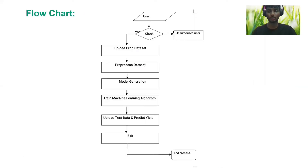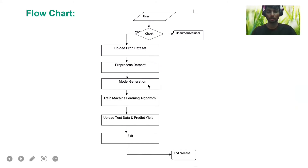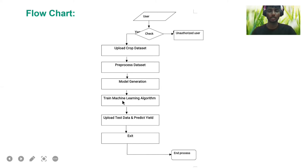The flowchart of this project is as follows: first, the system checks whether the user is an authorized or unauthorized user. Then it asks to upload the crop dataset. The uploaded crop dataset is preprocessed. Then the model of the project is generated. The algorithm is trained according to the uploaded crop dataset. Then the algorithm produces output according to the given historical dataset.